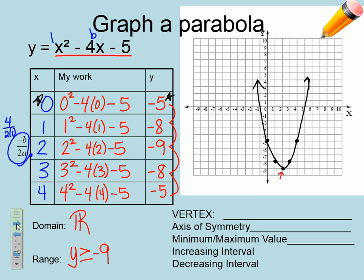The vertex is the point at the bottom of the parabola — that's (2, negative 9). The axis of symmetry is where you would fold the parabola in half, right through that vertex, along the line where x equals 2. Not just the number 2 — you have to say x equals 2. Folding along that line makes one side of the parabola match up with the other.